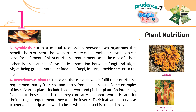3. Symbiosis: It is a mutual relationship between two organisms that benefits both of them. The two partners are called symbionts. Symbiosis can serve for fulfillment of plant nutritional requirements, as in the case of lichen. Lichen is an example of symbiotic association between fungi and algae. Algae, being green, synthesize food, and fungi in turn provide shelter to the algae.